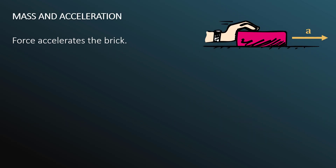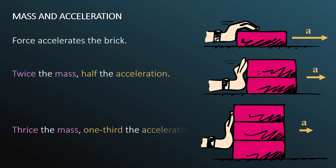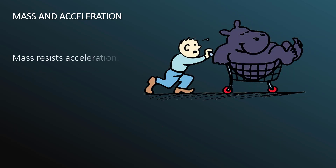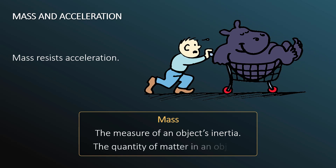Mass and acceleration: let's begin with the same scenario where we have one hand pushing on one brick, which produces some acceleration. If you have twice the mass, you yield half the acceleration. If you have thrice the mass, you get one-third the acceleration. Mass resists acceleration — mass is the measure of an object's inertia and the quantity of matter in an object.